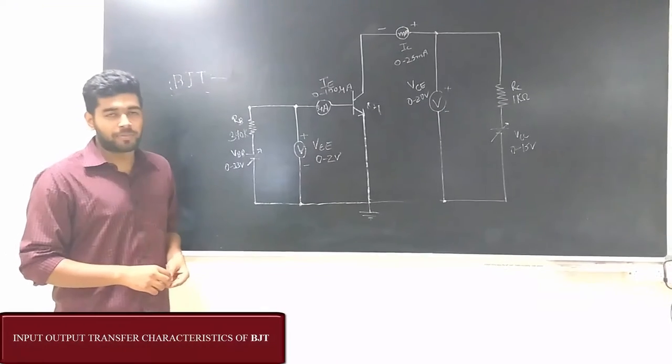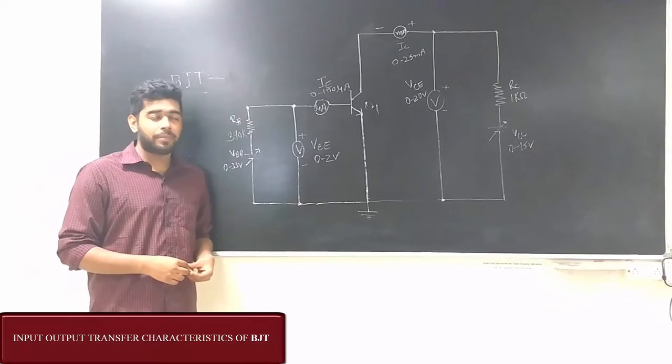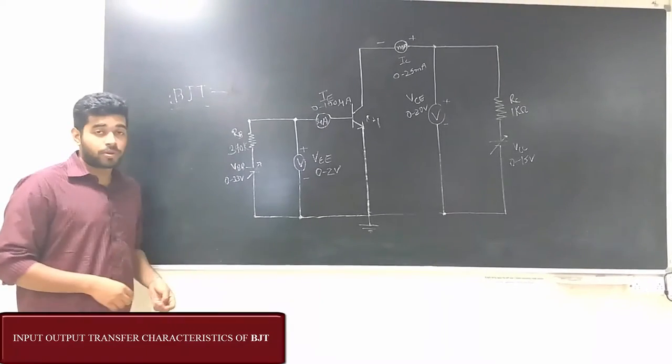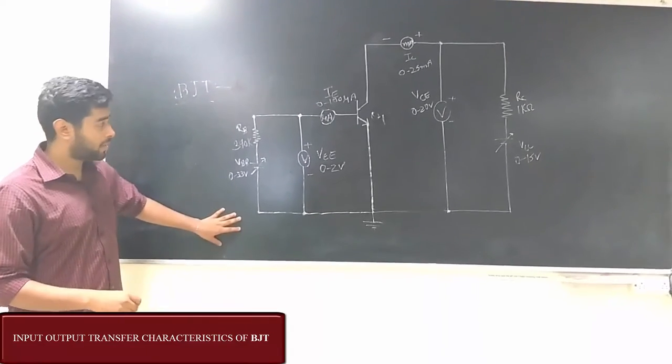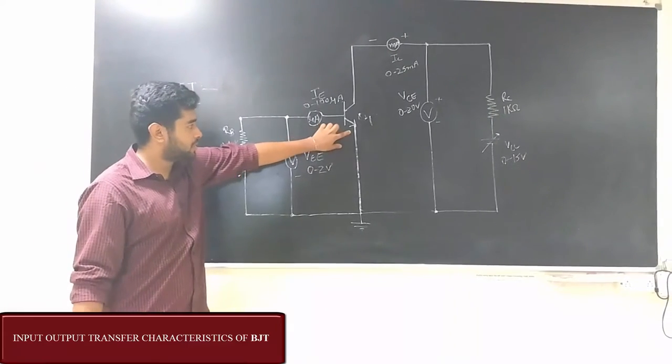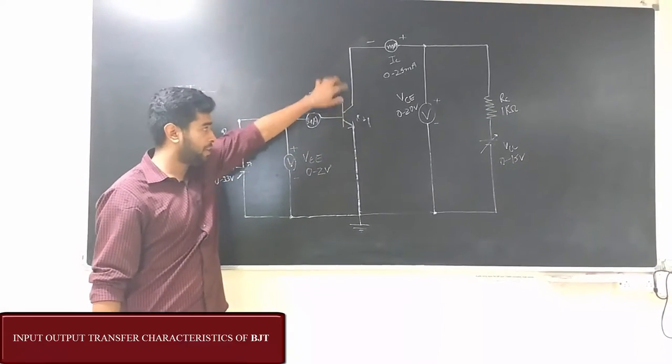Hello guys, welcome to Analog Electronics One Lab. Today we are going to discuss the input output characteristics of a BJT. So this is the circuit, this is the BJT, its emitter, base, and collector are here.